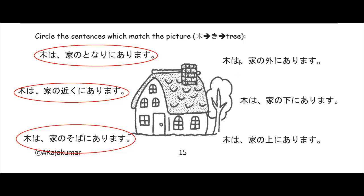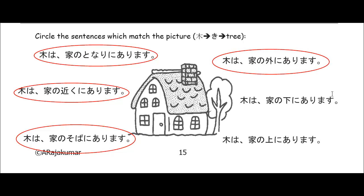Let's check this one. Ki wa, as for the tree, ie no soto — soto means outside, outside of the house, outside the house. Ni — that's your location, it means it's at that place outside the house — arimasu, it exists. So the tree exists at outside the house. In other words, the tree is outside the house. And that is also true, tadashii. That gets a circle as well.